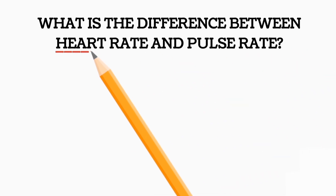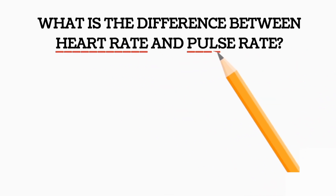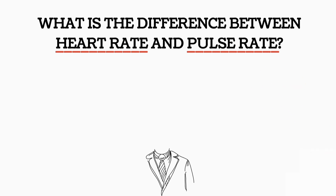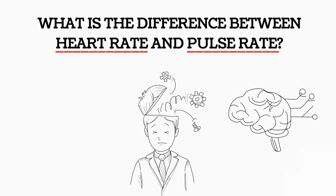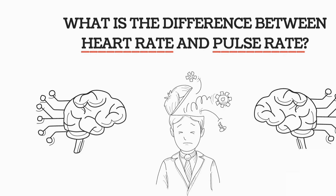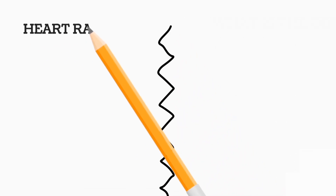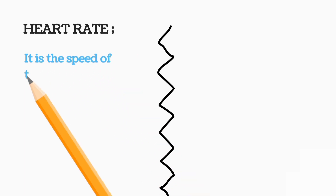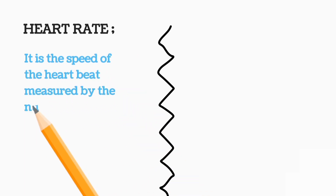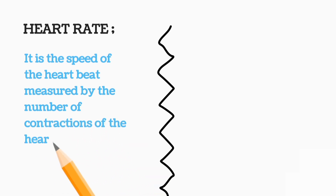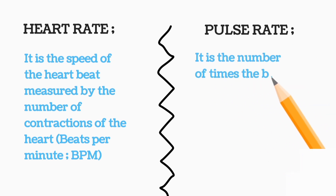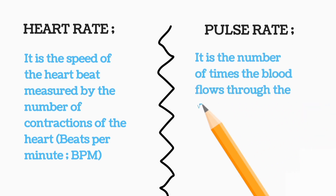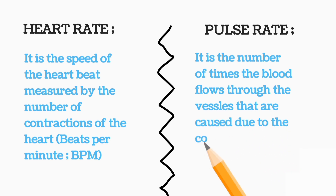What is the difference between a heart rate and a pulse rate? They might look similar but they are quite different from each other. First, heart rate is the speed of the heartbeat measured by the number of contractions of the heart, measured in beats per minute or BPM. Pulse rate is the number of times blood flows through the vessels, caused by the contractions of the heart, in a minute.